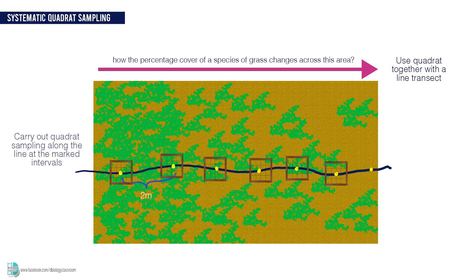When you do this along the line, you will obtain the information of how the species changes across that area. This is a good way to understand the ecological gradient of a place.